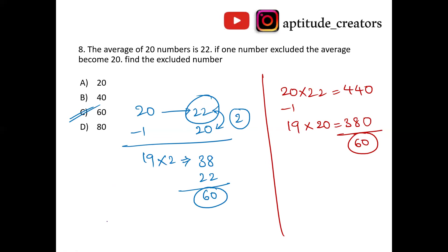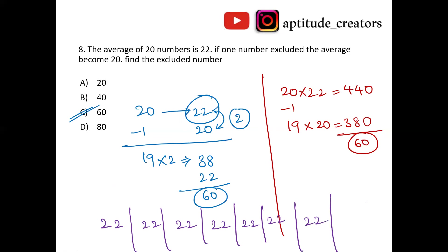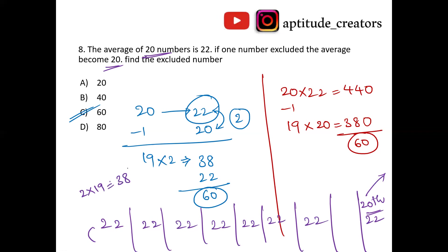Shortcut explanation: assume all 20 numbers are 22. When the 20th number is removed, the average drops from 22 to 20 — a decrease of 2. The remaining 19 numbers each effectively give 2 marks to the excluded number: 19 × 2 equals 38. So excluded number is 22 plus 38 equals 60. Answer is option C, 60.